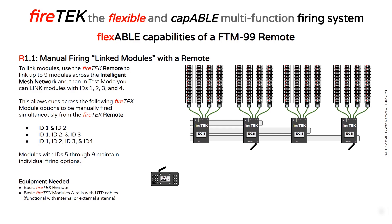This allows you to manually and simultaneously fire cues across groups of modules. You can simultaneously fire identical cues across linked groups ID 1 and 2, group ID 1, 2, and 3, and group ID 1, 2, 3, and 4.